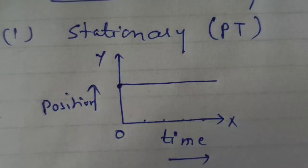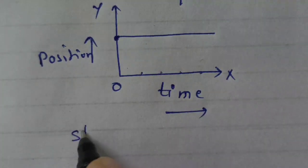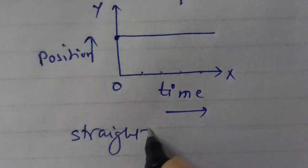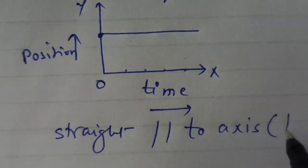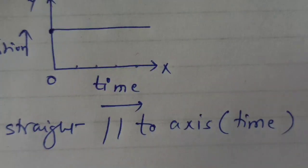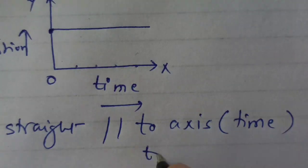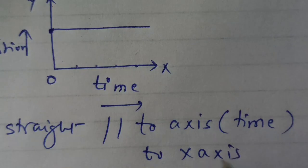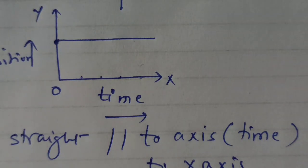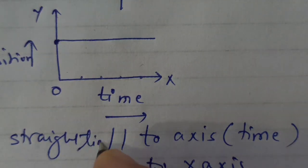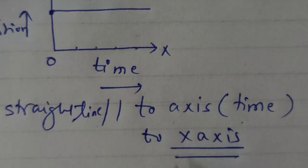The nature of this graph is a straight line parallel to the time axis — you can also say parallel to the x-axis. So in the exam, if you are asked what is the nature of the graph or to draw the graph and write its nature, you write: it's a straight line which is parallel to the time axis, or parallel to the x-axis.